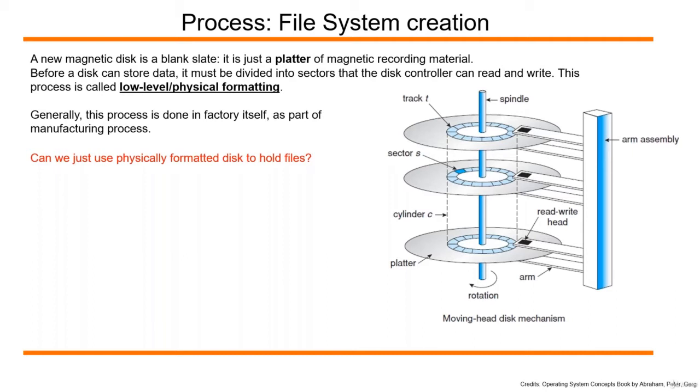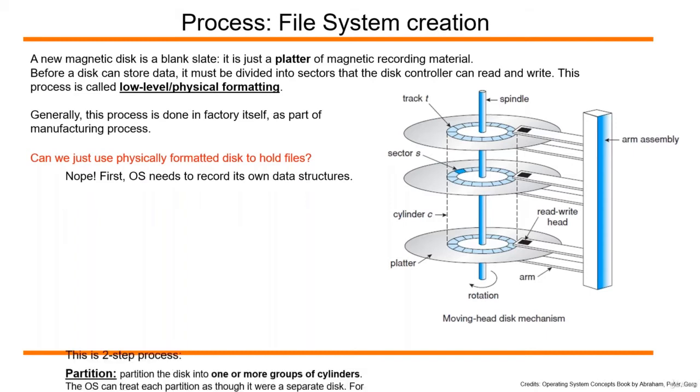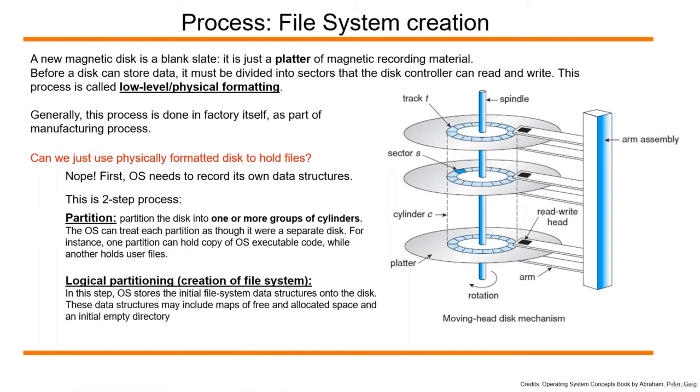Can we just use this physically formatted disk to hold our files? The answer is no. First, the OS needs to record its own data structures. It is a two-step process. In step one, it will partition the disk into one or more groups of cylinders. What is a cylinder? All the tracks that fall under the same read-write head are called one cylinder.